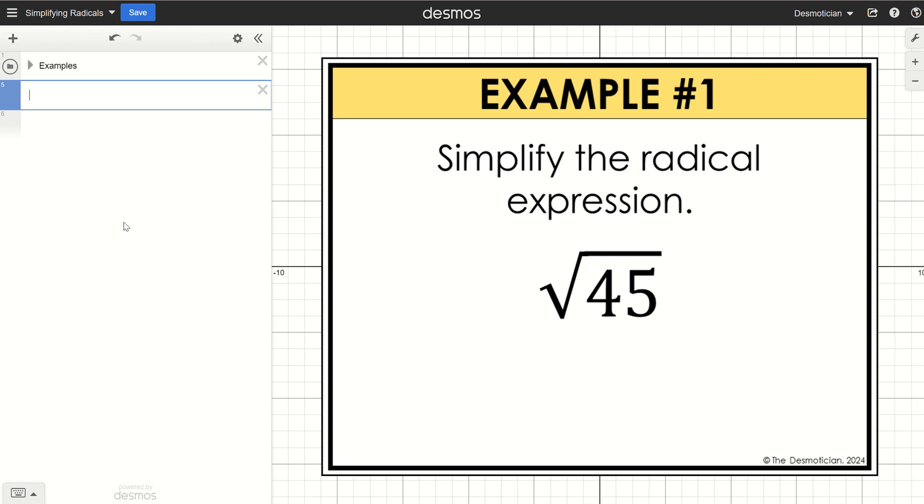In this video I'm going to show you how to simplify a radical expression using Desmos. In our example we have the square root of 45.